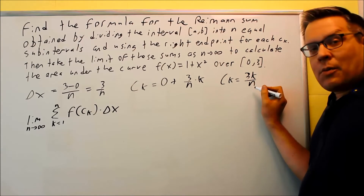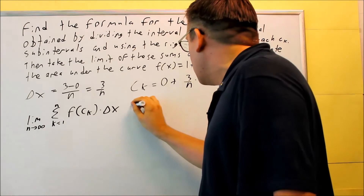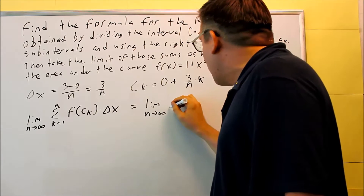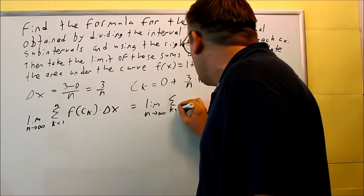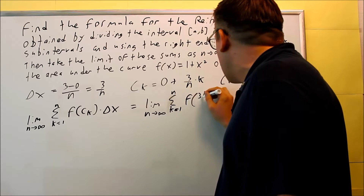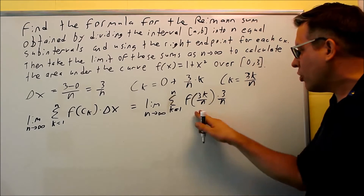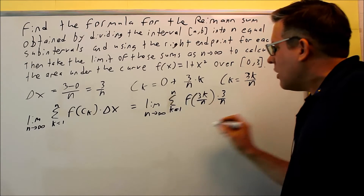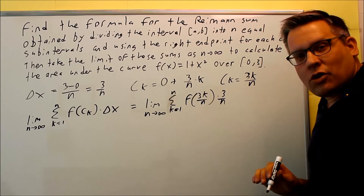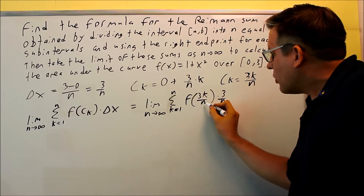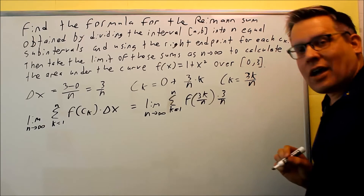For this specific problem, I have ck, and I need to put that into the formula. So the next step is: limit as n goes to infinity, summation k equals one to n of f(3k/n) times delta x, which we know is 3/n. This would be the formula you can use to get the Riemann sum. We can go further — f(3k/n) means you substitute 3k/n in place of x in the function.